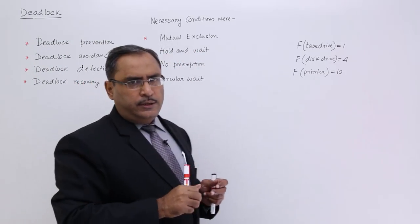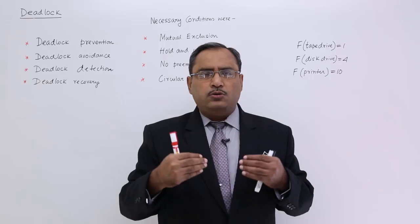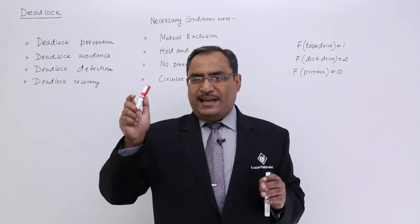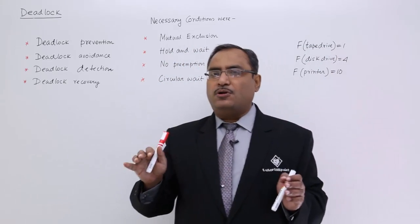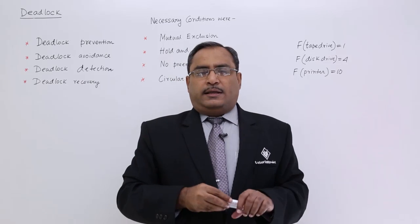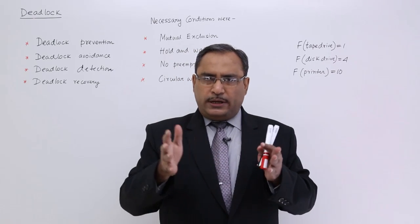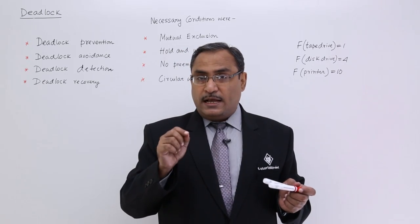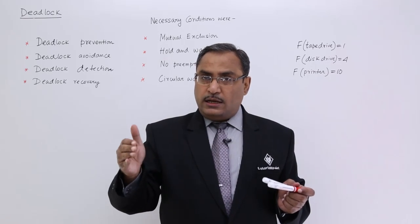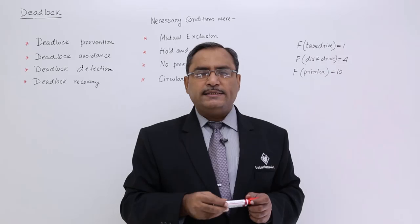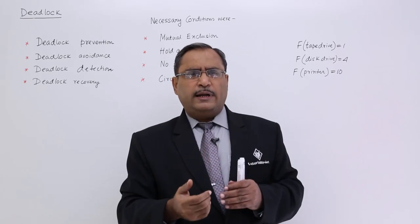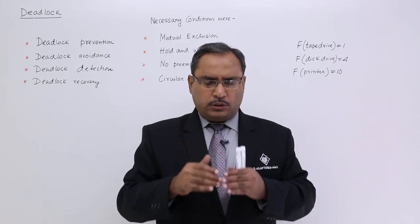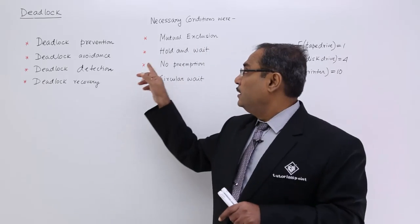Next one is hold and wait. Suppose I am a process and I require R1, R2, and R3. I have got R1 and R2 and I am waiting for R3 — this situation will not occur if you apply the solution for hold and wait. A process before starting should get all the resources, then only it will start execution. That means the process will get R1, R2, R3 in one shot, then it will go on executing — not like getting R1 and R2 and then waiting for R3. Getting all resources first, then initiating, is one solution for hold and wait.